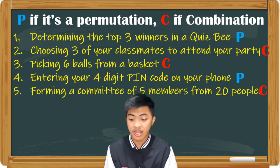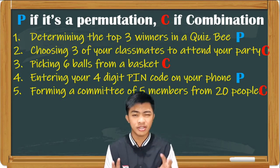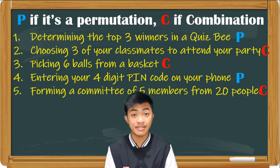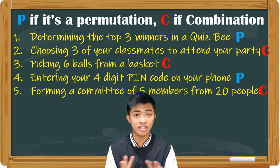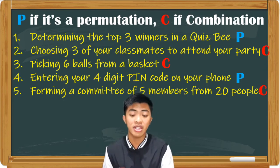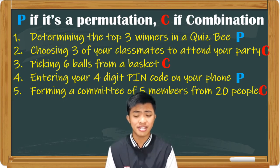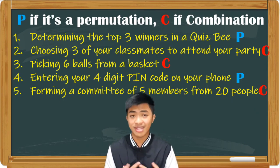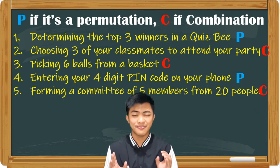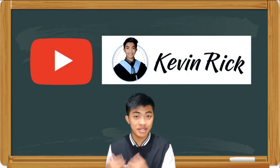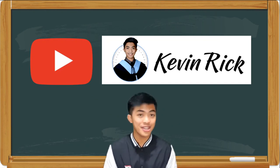Numbers two, three, and five are combinations. Look at the keywords — for number two, choosing three of your classmates, we're just going to choose with no arrangement involved. Number three, picking six balls — again, no arrangement involved. And number five, forming a committee of five members from 20 people — you're just choosing five members, so it doesn't involve arrangement. Always remember: for permutation, there is an arrangement; for combination, arrangement doesn't matter.